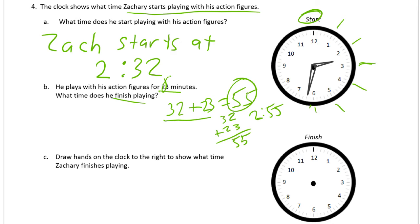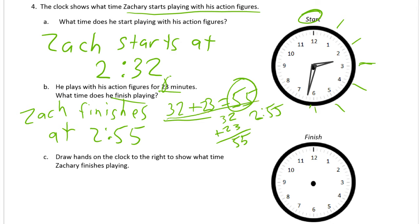Be careful: if your total is more than sixty, you're going into the next hour and it gets more complicated. This works as long as the sum is under sixty. If you counted around the clock face instead, you'd show marks: count three minutes to get to thirty-five, then ten more to forty-five, then another ten to fifty-five — right at the eleven, which is fifty-five minutes. Either strategy works.